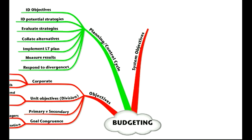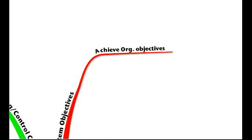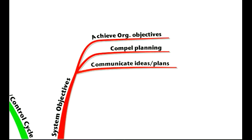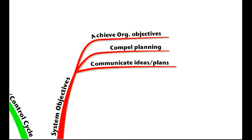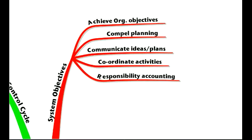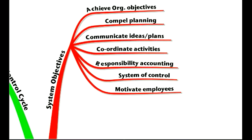System objectives. Remember that we must have systems in place to achieve the objectives, or else we won't achieve our organisational objectives. We also want to compel planning, to make our managers plan, and to communicate ideas or plans throughout the organisation, ensuring everyone's working in the same direction. To coordinate the activities — if there's no system in place there'll be no coordination. To have responsibility accounting: you should only be responsible for things that you can control. The system objectives should ensure a system of control is in place and should lead to motivation for employees.